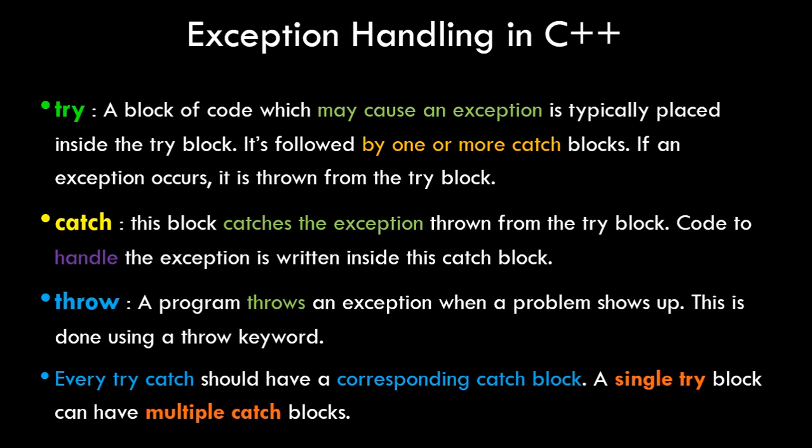If an exception occurs, it is thrown from the try block to the catch block. Basically, wherever you feel an exception might occur, you put that entire piece of code inside the try block. The catch block catches the exception thrown from the try block. Code to handle the exception is written inside the catch block — that can be anything, such as simply showing an error message or code that actually corrects the exception.